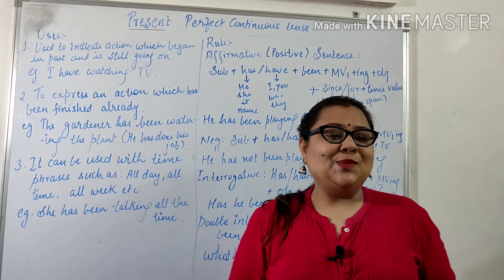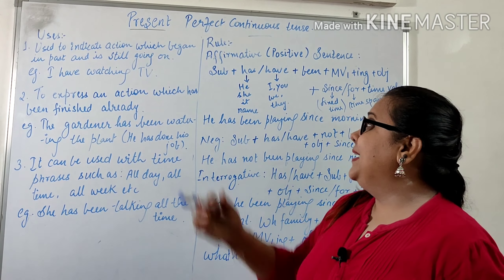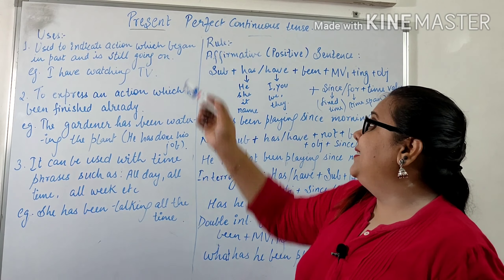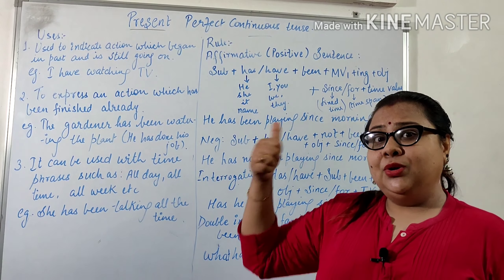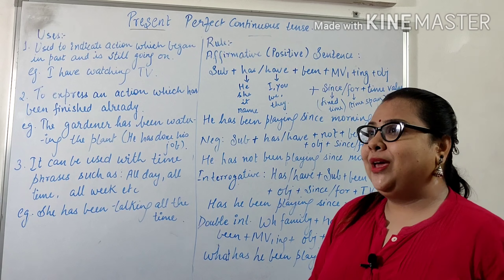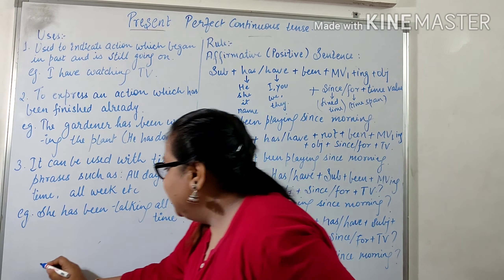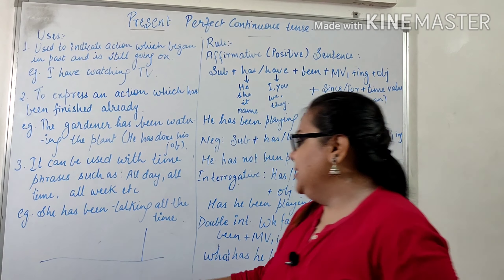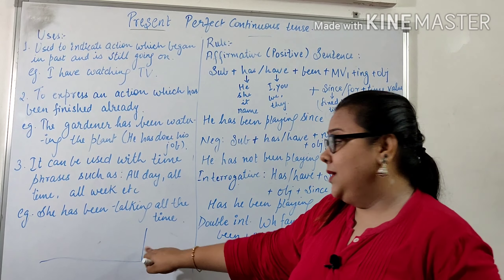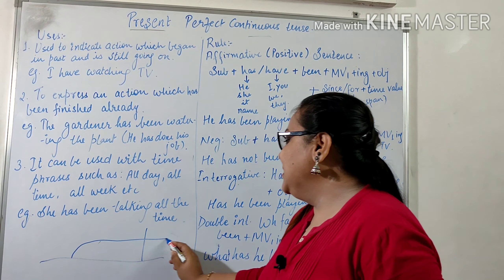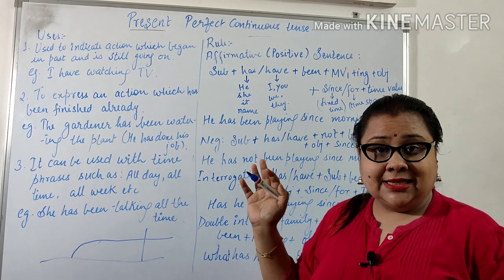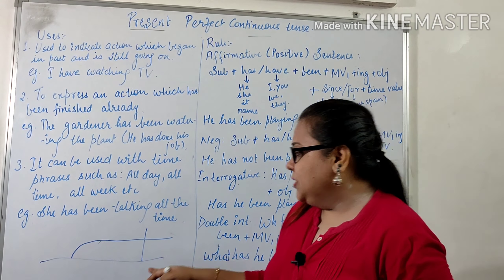Hello guys, as promised I'm back with the topic: present perfect continuous tense. Before explaining, let me show you with the help of a diagram how to understand when to use these types of sentences. If this is your state — the time of speaking — and something began in the past but it's still going on, in this situation we make use of present perfect continuous sentences.